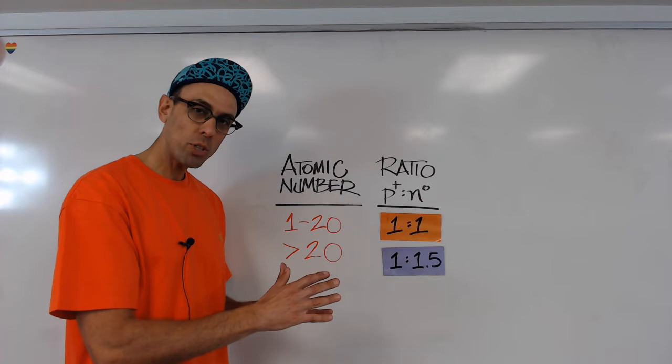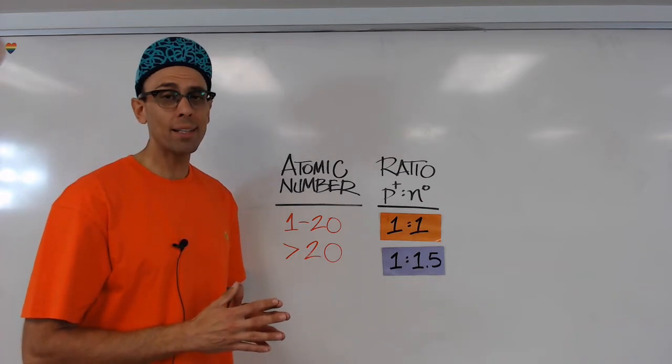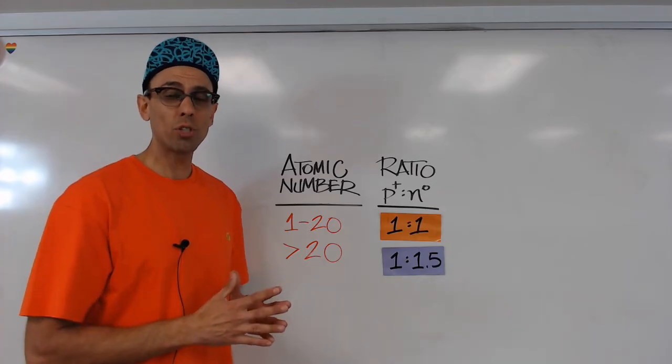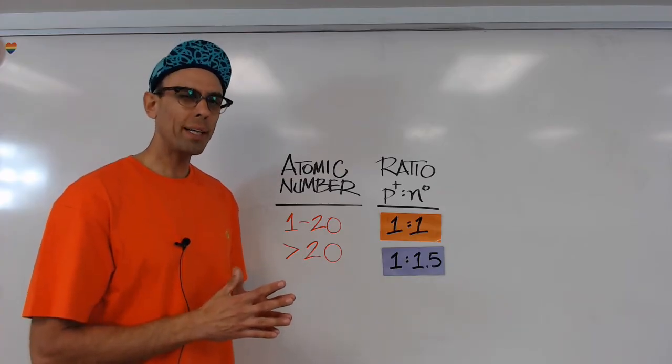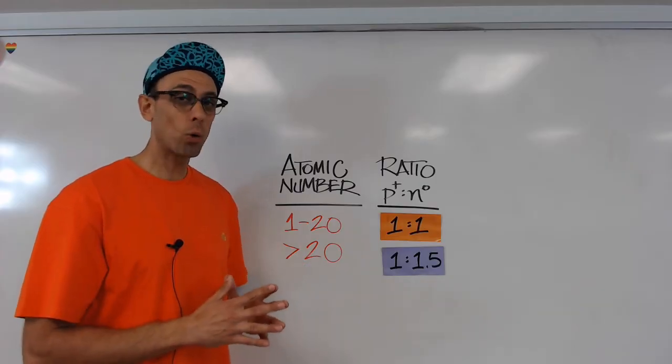So for every proton you would need about 1 and a half neutrons. So if we had let's say 30 protons in the nucleus, we would need about 45 neutrons in order to create a stable nucleus that won't decay.